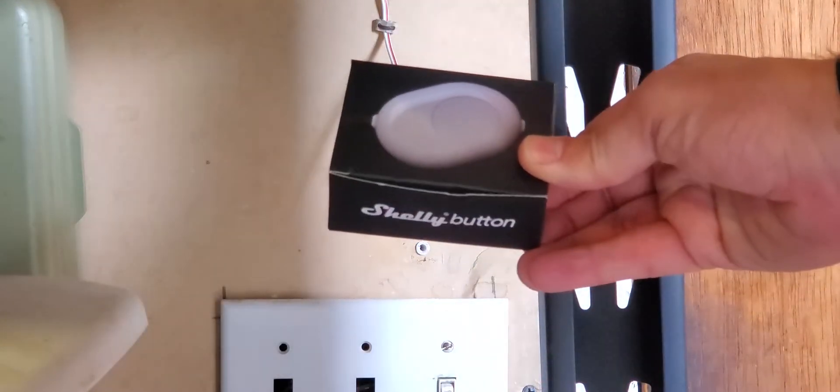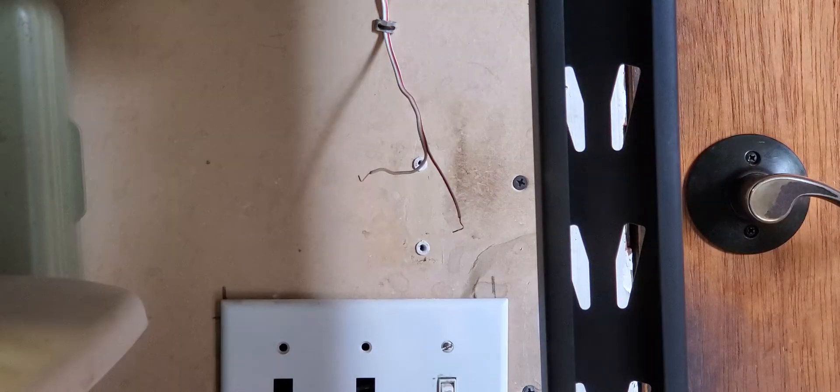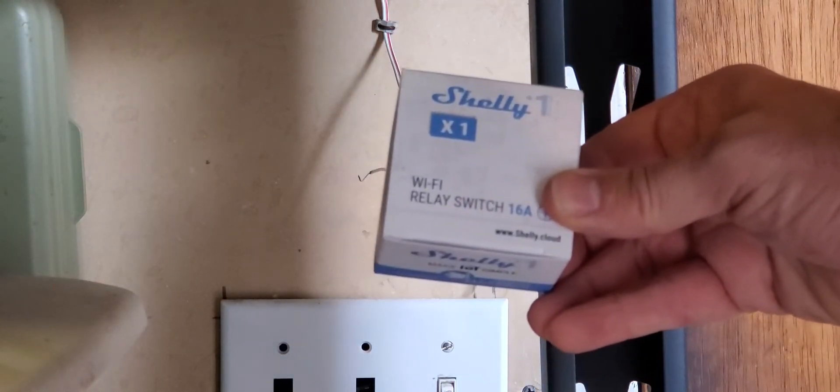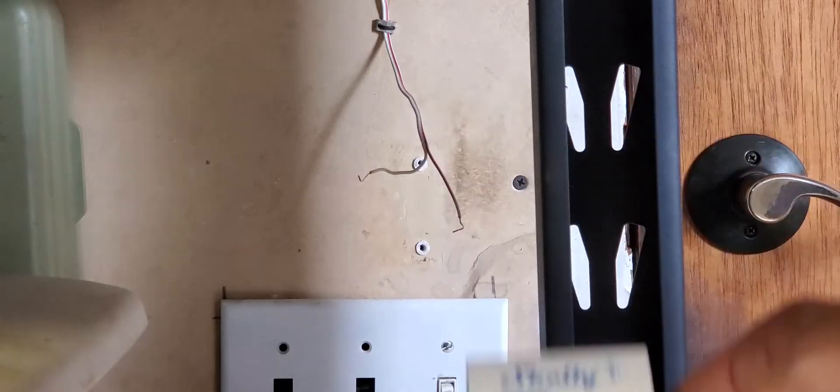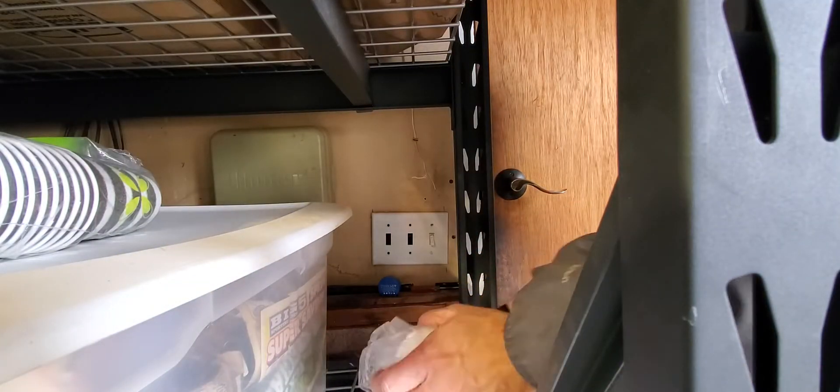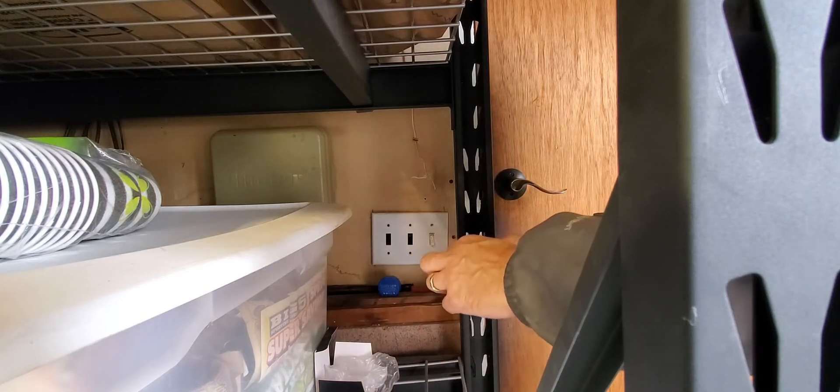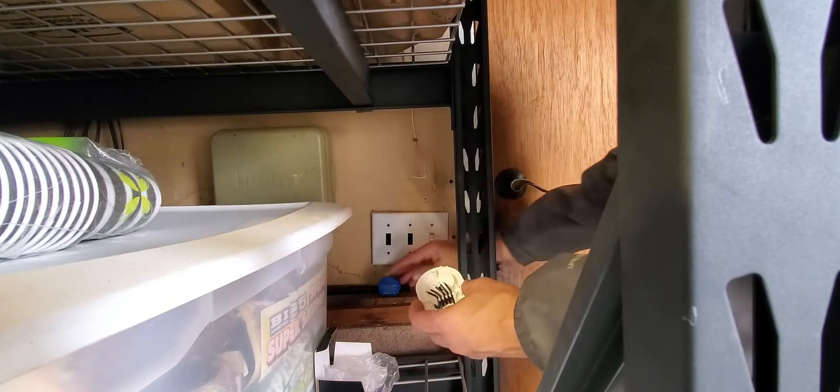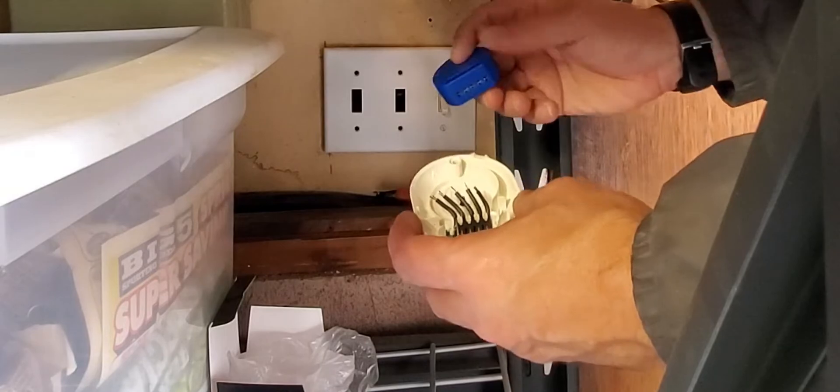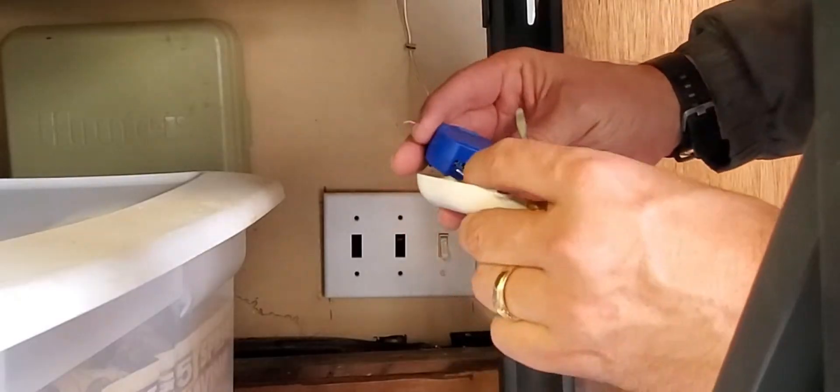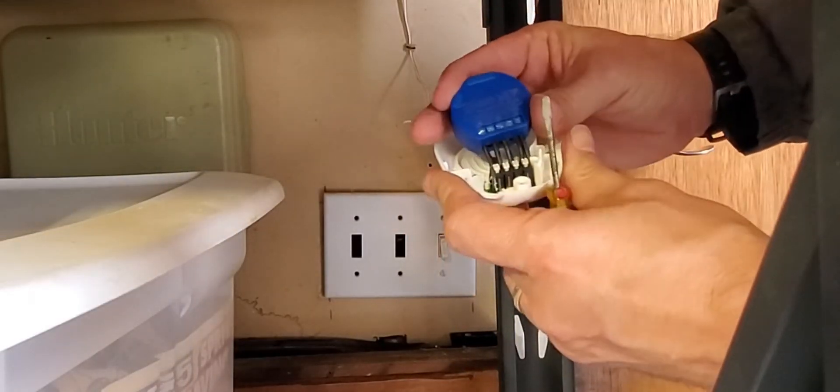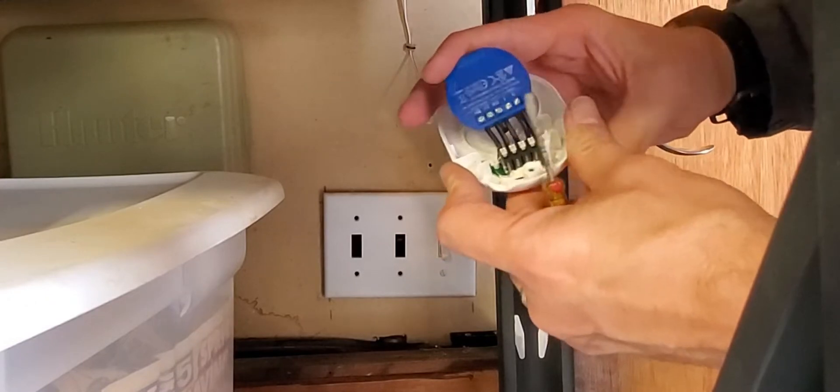Now that we've determined the type of garage door opener we have we'll take a Shelly button which is just an enclosure for the Shelly one relay. Also a couple of other Shelly relays will fit into this enclosure as well. First we unbox it and you'll see there's five wires inside of it. Those five wires will line up with the five wires on the Shelly relay.